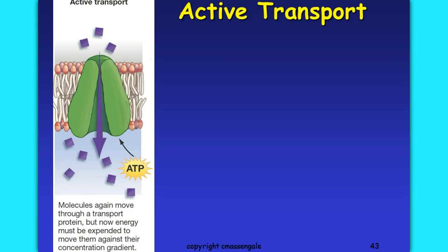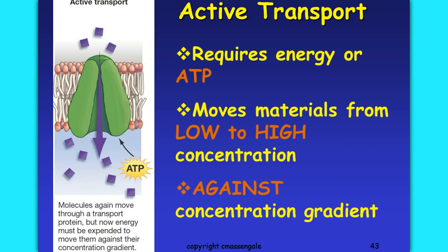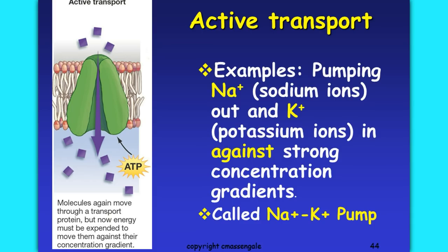Our goal now is to look at active transport. Active transport is different from passive transport in that it requires ATP, or energy. We are moving materials from low to high concentration. Diffusion is like sitting at the top of a hill on your bike and gliding down without any effort, but active transport is the opposite — you're sitting at the bottom at a low concentration and have to move uphill against the gradient to a higher concentration.